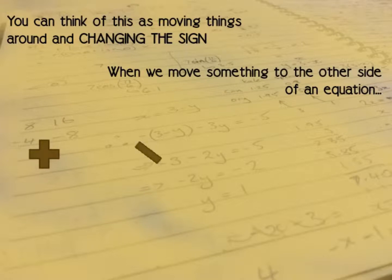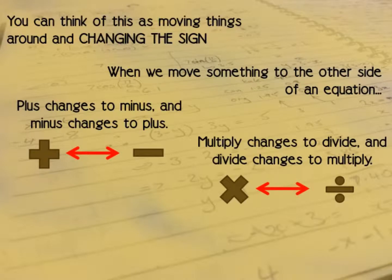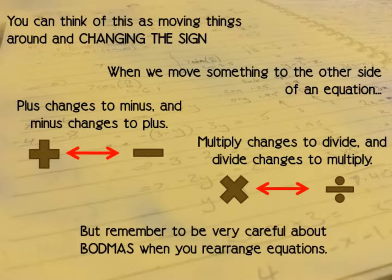So you can think of rearranging equations as moving things around and changing the sign. So whenever we move something to the other side of an equation, we must change the sign according to these two pairs. When you change the side, you change the sign. Plus changes to minus, and minus changes to plus. And multiply changes to divide, and divide changes to multiply. Now this is a very useful way to think about it, but you must be very careful about BODMAS whenever you rearrange equations.